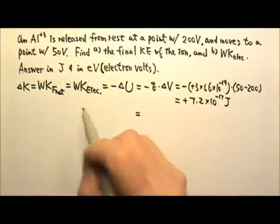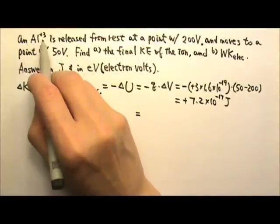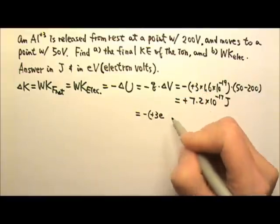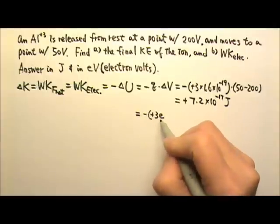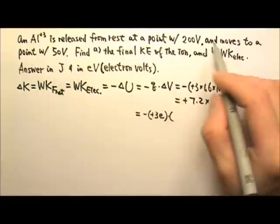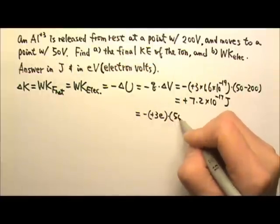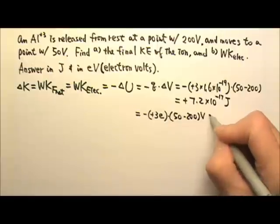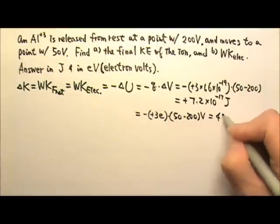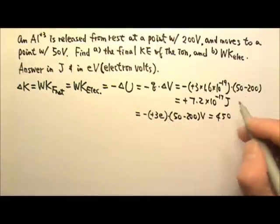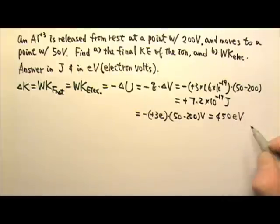In this case it is an aluminum positive 3, so the charge is positive 3e — positive 3 times the elementary charge. Delta V is the final minus the initial, so it's 50 minus 200 volts. If we do this calculation, we get 450, and the unit is elementary charge times volts, which is electron volts. So the answer is 450 electron volts.